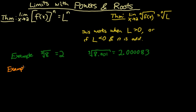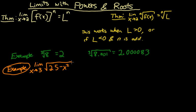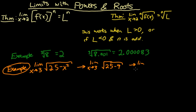Let's go over some examples of limits with powers and roots. For the next example, we have the limit as x approaches 3 of the square root of 25 minus x squared. This limit is done just by plugging 3 in, and as long as we don't have any problems with zeros, we just work it out that way. So this becomes the square root of 25 minus 9, because 3 squared equals 9. That gives us the square root of 16.